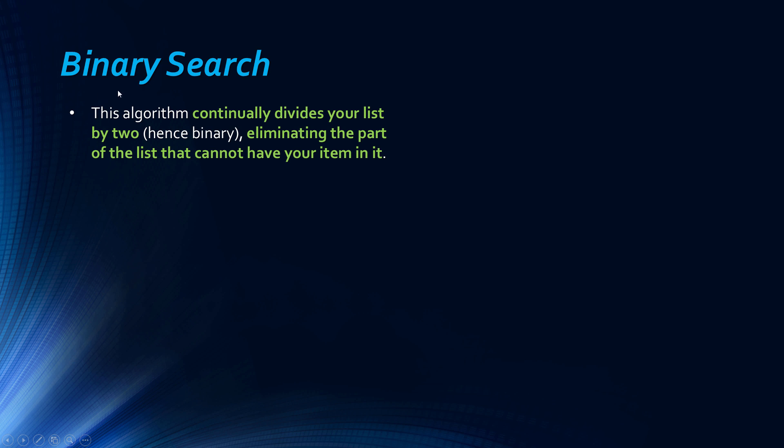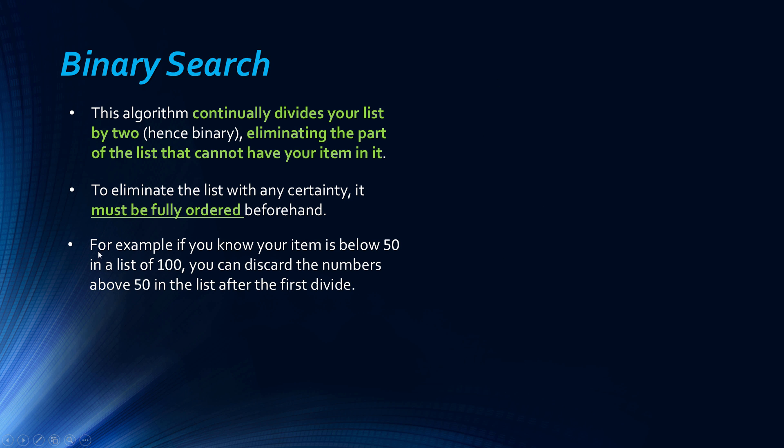So the next one we're going to look at is binary search. And binary search is slightly more elegant. And what it does is it continually divides your list by two. Binary we'll look at a ton more in this series because it's so fundamental. But binary is a base two system and it's just dividing it by two each time. And what it can do is it eliminates the part of the list that cannot have your item in it. So the reason it can do this is because the list must be fully ordered. Linear search doesn't necessarily have to be ordered in fact.